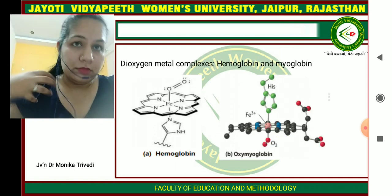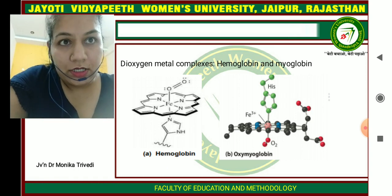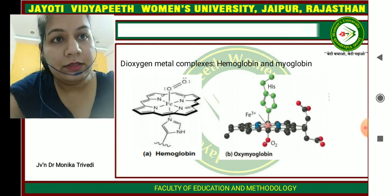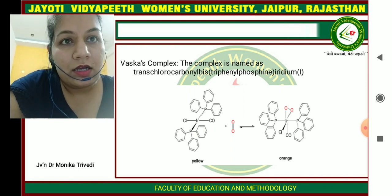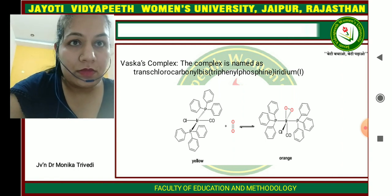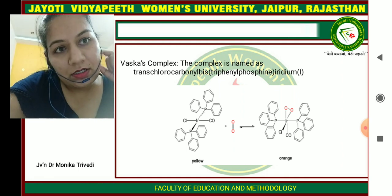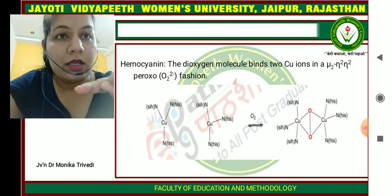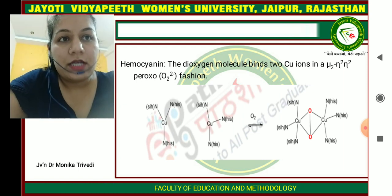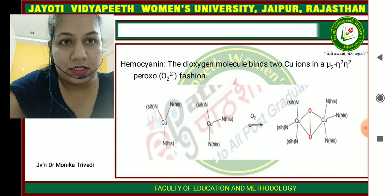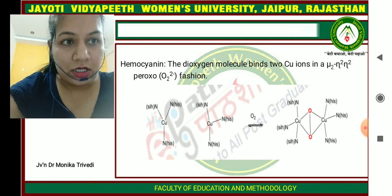Biologically important dioxygen-metal complexes include hemoglobin and oxymyoglobin, where O2 is present as a ligand. Another example is the trichlorocarbonyl tris(triphenylphosphine)iridium complex; when this yellow complex combines with the O2 ligand it converts to an orange color. In hemocyanin, the dioxygen molecule binds with two copper ions in a μ2,η2:η2-peroxo mode (O2 to O2²⁻). The structure of this hemocyanin complex is shown.